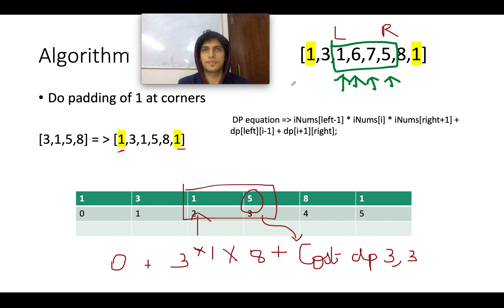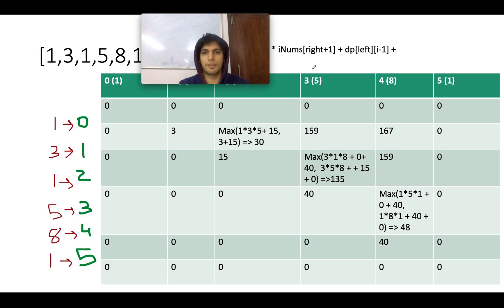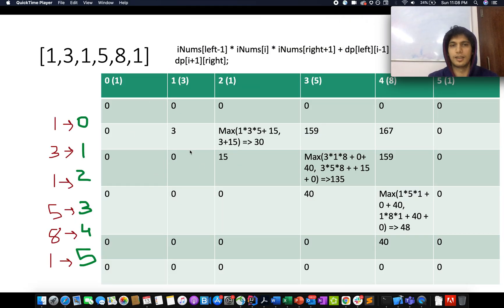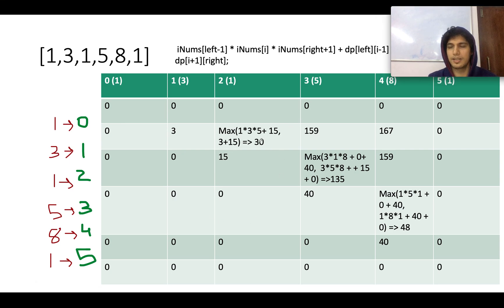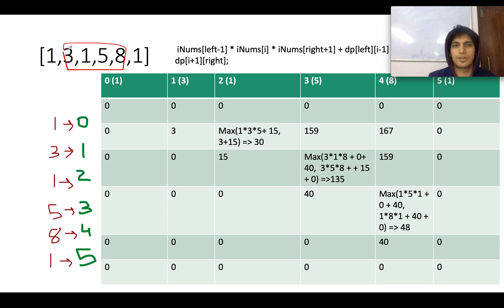What are we going to do in this algorithm? We will iterate in a window fashion, starting from a window of size 1 up to a window of size equal to the length of the input, and we will be filling in our DP array. You will be using pre-computed values of a lesser window size to compute larger windows.